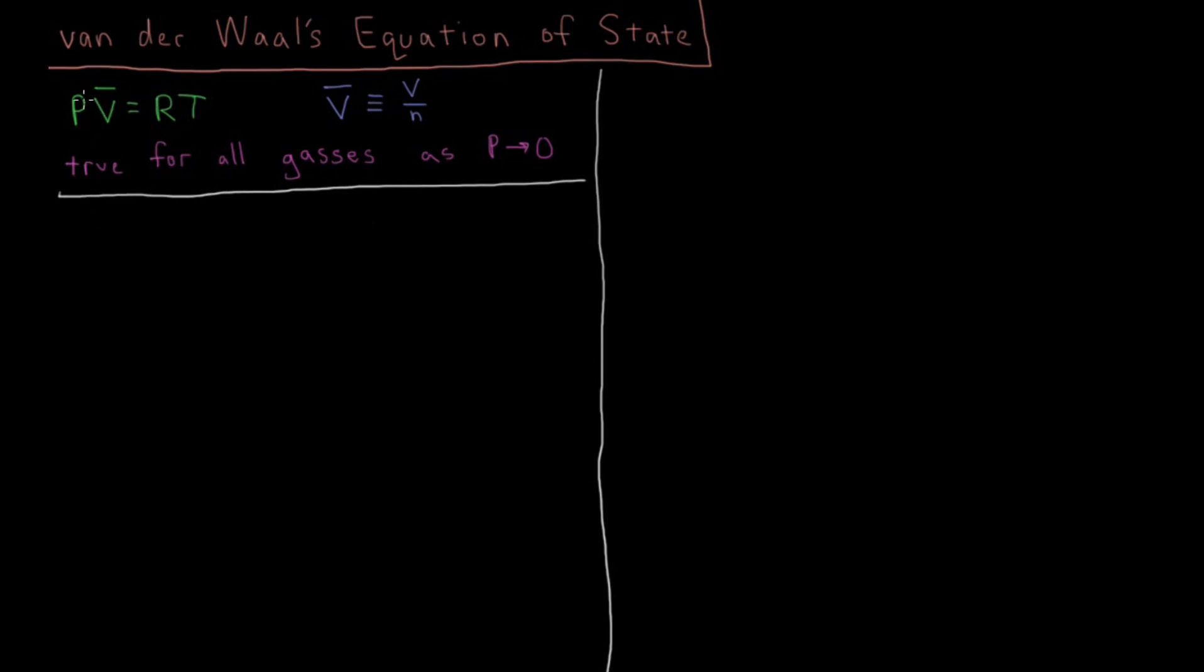So we can define a factor here. If we divide PV bar by RT then we should get 1 on the right hand side. So we are going to define the quantity Z as PV bar over RT, and we are going to call this, for a gas, its compressibility factor. For a given ideal gas this should just be 1 because PV bar equals RT for an ideal gas, so Z equals 1 for an ideal gas.